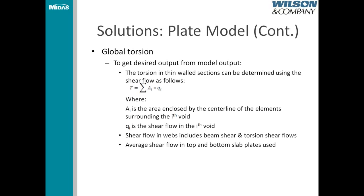To get global torsion, the torsion in thin-wall sections is determined using this equation: torsion equals the sum of A_i — the area enclosed by the centerline of the elements surrounding the i-th void — times q_i, the shear flow in the i-th void. The shear flow in the webs included both beam shear and torsional effects, causing shear to increase on one side and decrease on the other. Rather than separating those two effects for the webs, I chose to only consider the top and bottom slab plates in calculating the torsional moment.